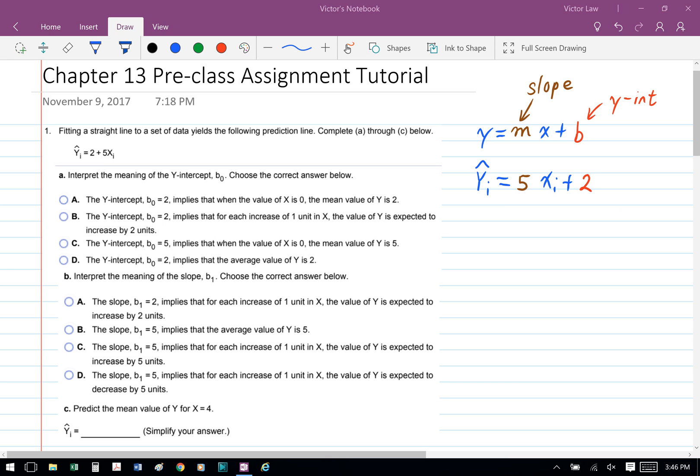We can rearrange the formula as y-hat equals 5 times xi plus 2. So we know the y-intercept is equal to 2. And this implies that when the value of x is 0, the mean value of y is 2.